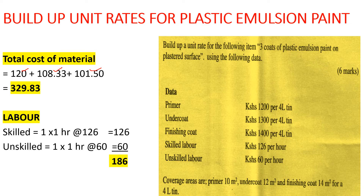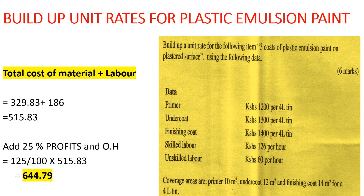Now let's add labor. Assuming one skilled laborer and one unskilled laborer each working for one hour: skilled labor is 1 hour at 126 shillings, giving 126 shillings; unskilled labor is 1 hour at 60 shillings, giving 60 shillings. The total labor cost is 186 shillings.